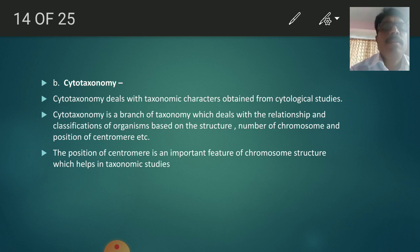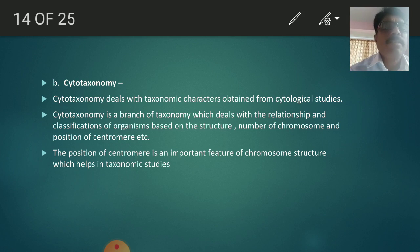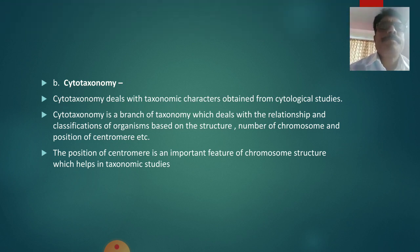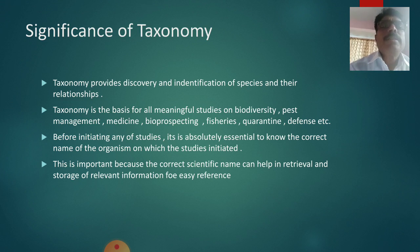The position of centromere is an important feature of chromosome structure which helps in taxonomic studies. In the nucleus there is a presence of chromosomes, and their structure and positions are very important features of that particular animal which are useful for classification. Therefore this is one of the important principles of classification.